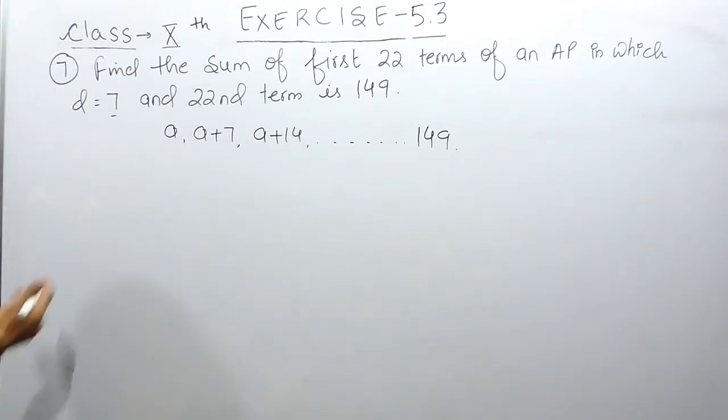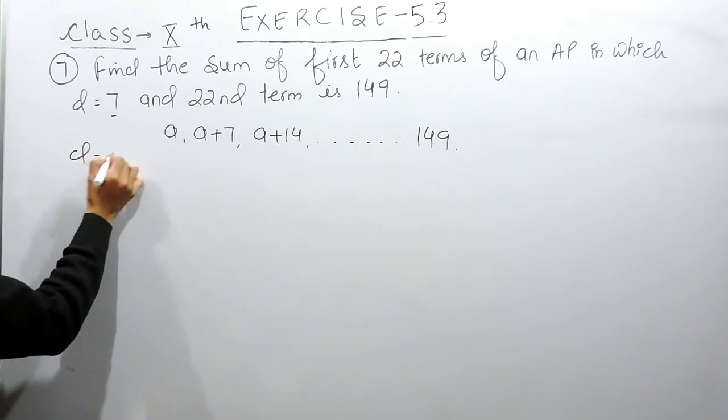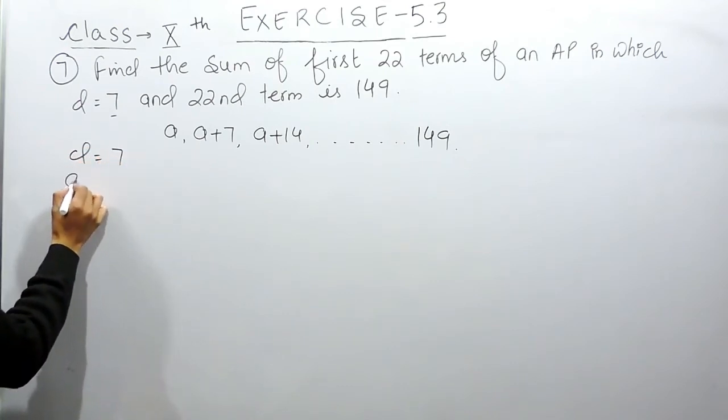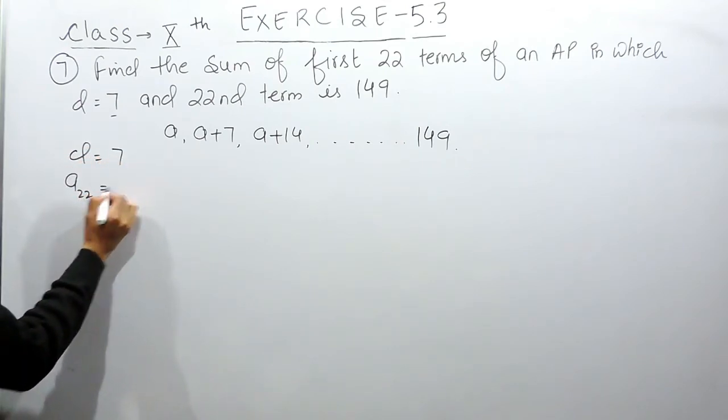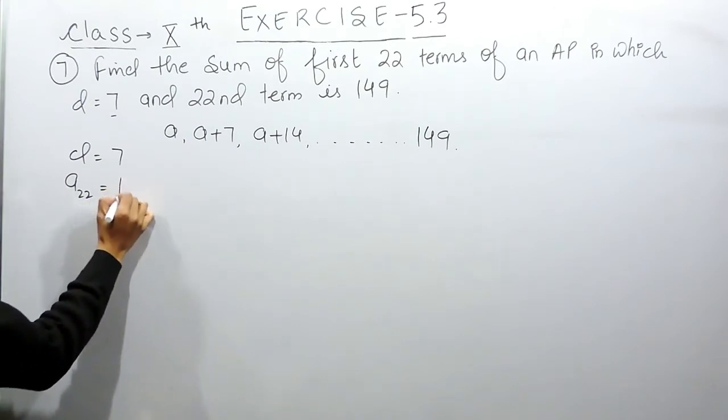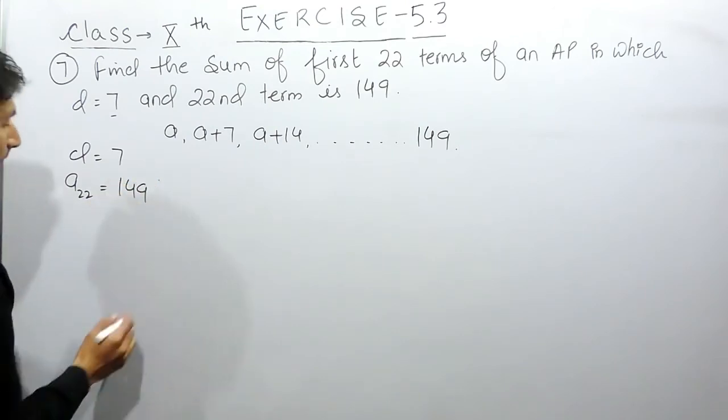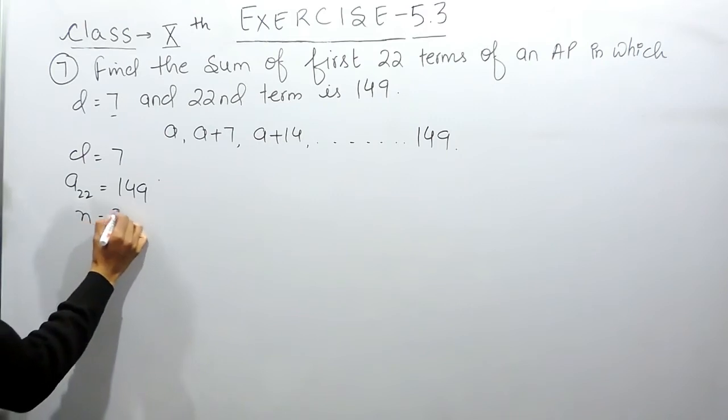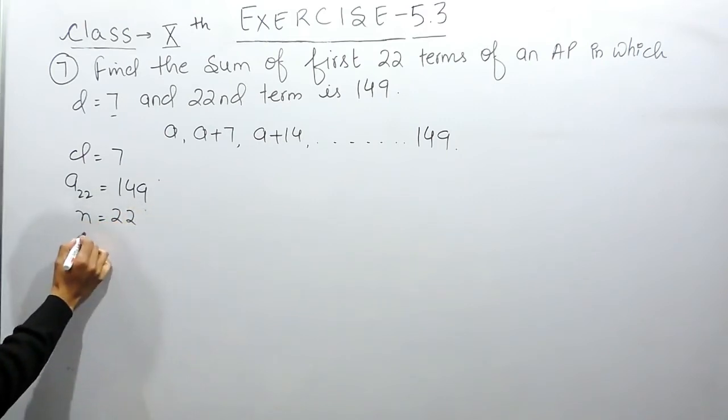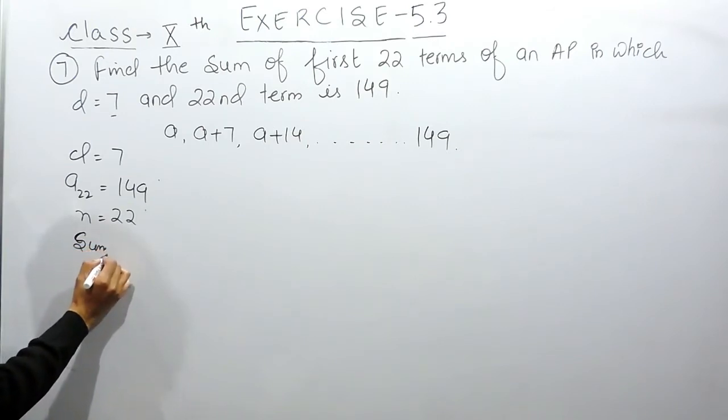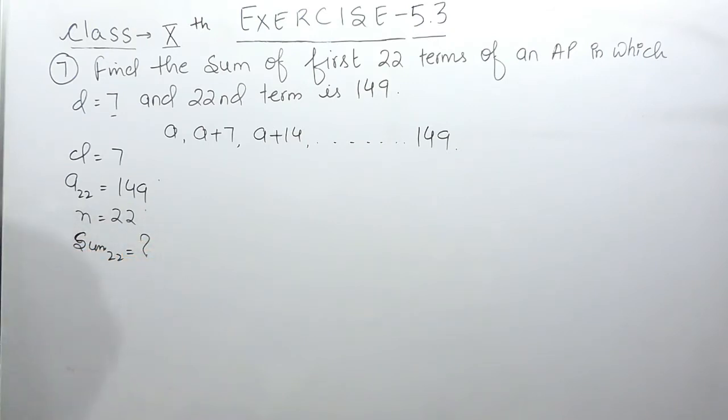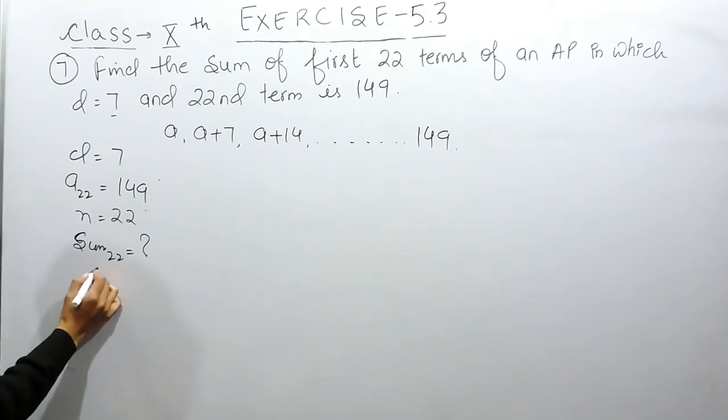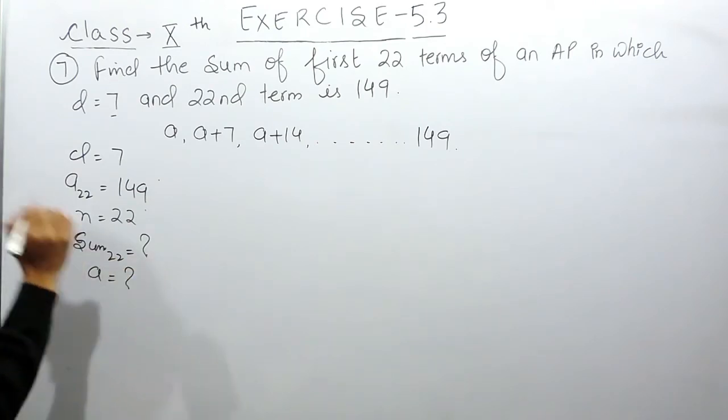In this question, the common difference is given as 7, and the last term which is the 22nd term is given as 149. The number of terms is obviously 22, and you have to find the sum of 22 terms.